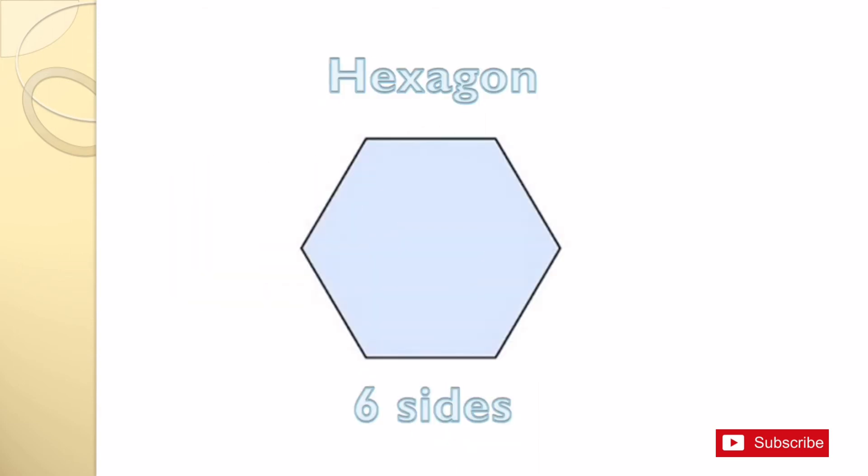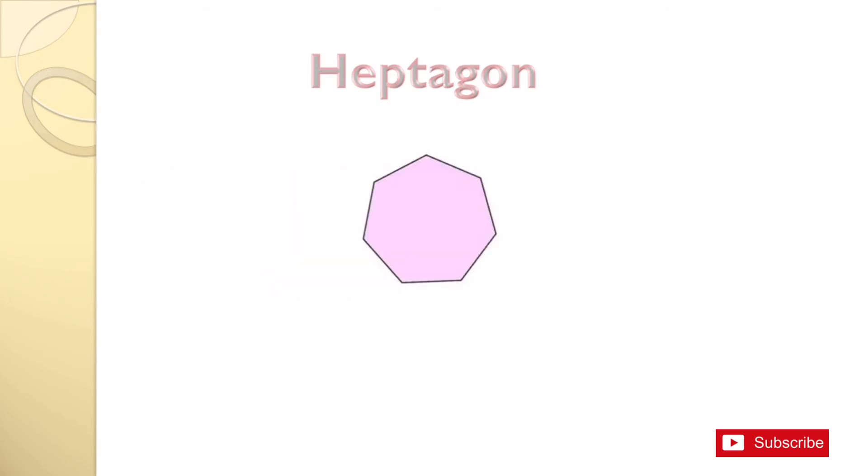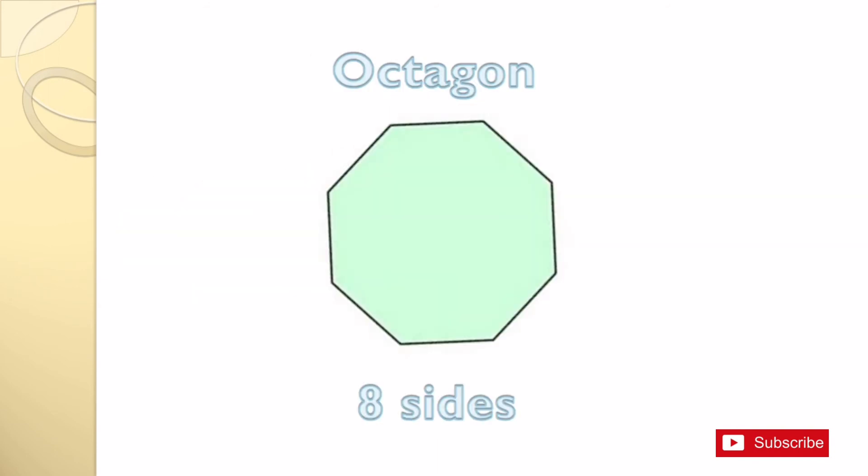A hexagon has six sides. A heptagon has seven sides. An octagon has eight sides.